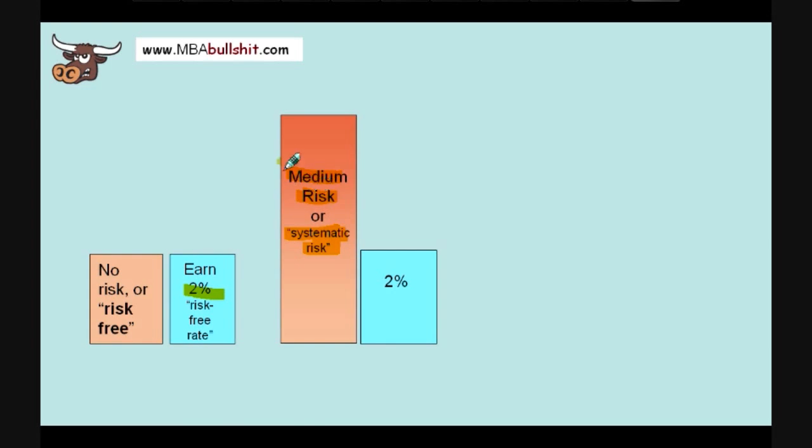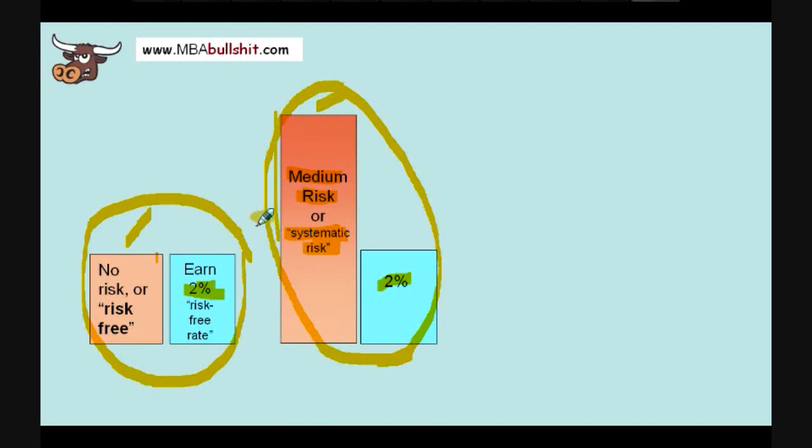Now, what if I also offered you a risk-free investment, a zero risk investment or deposit earning 2% and I also offered you a medium risk investment. So, if you had to choose between this investment here or this investment here, which one would you choose? Which one? They earned the same amount but this one has higher risk than this.